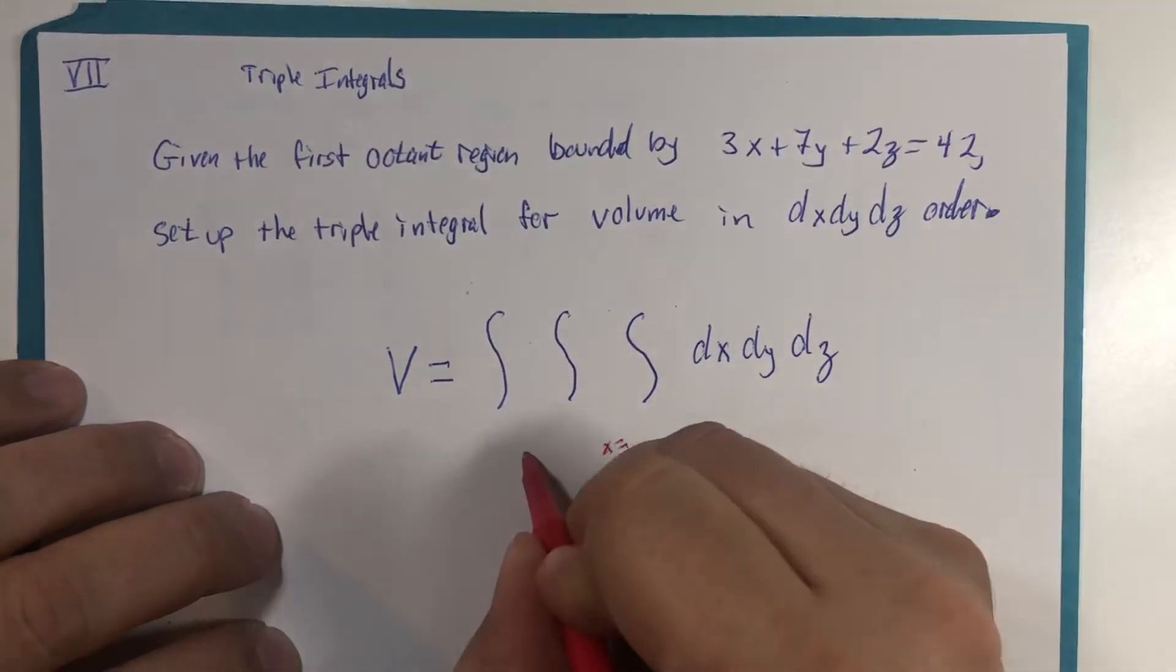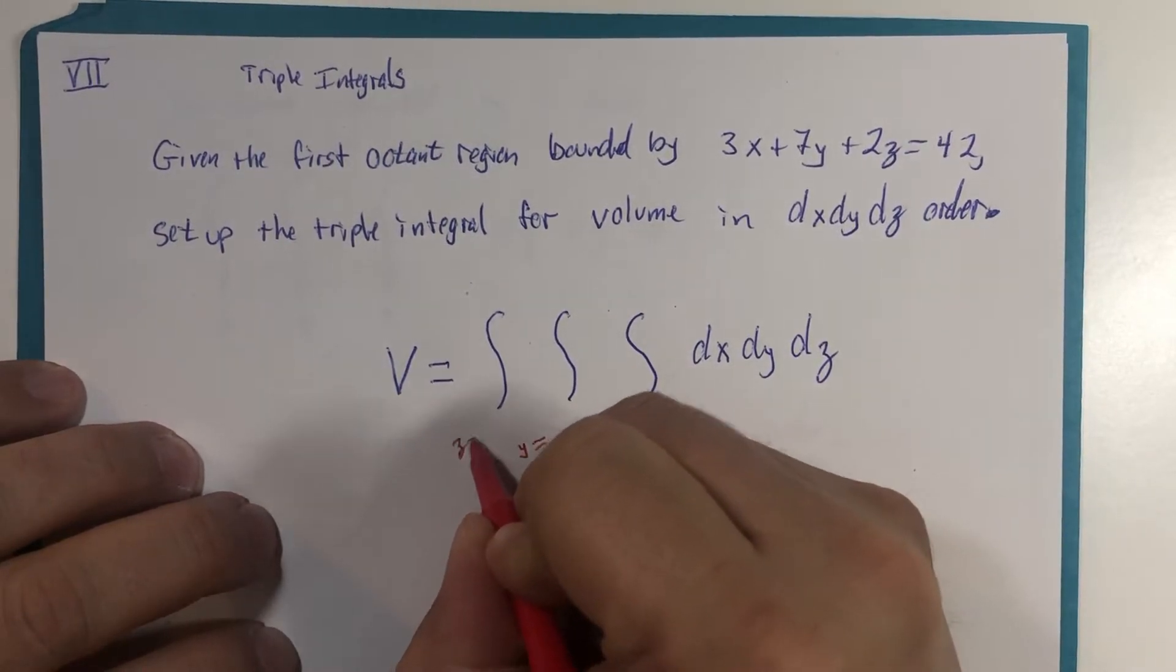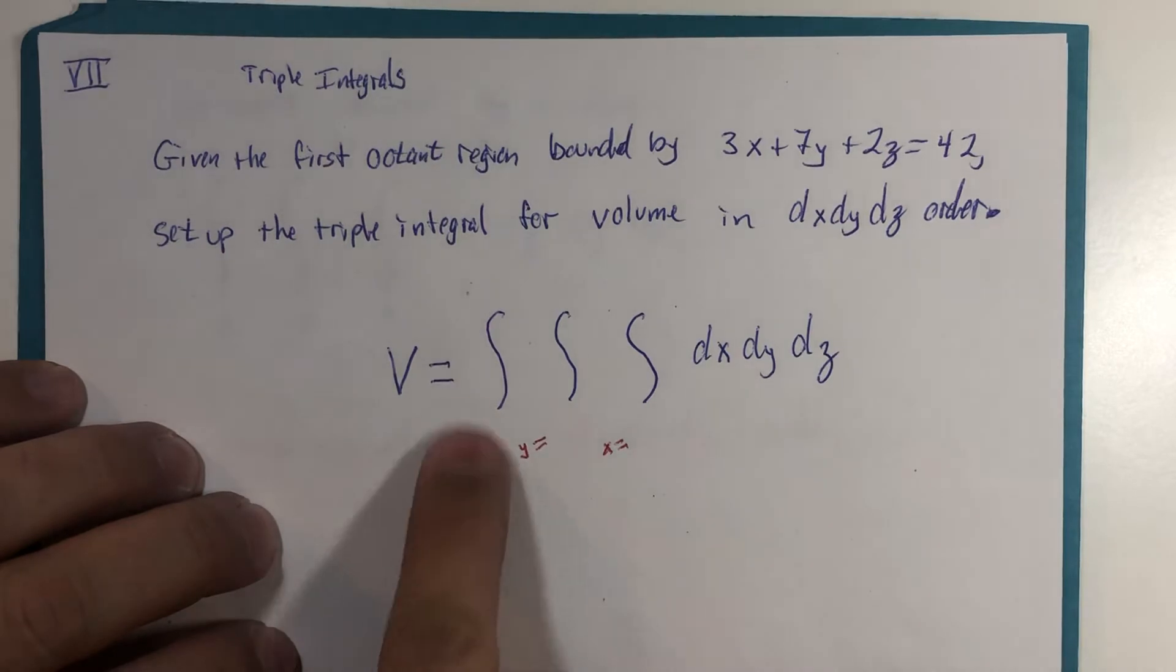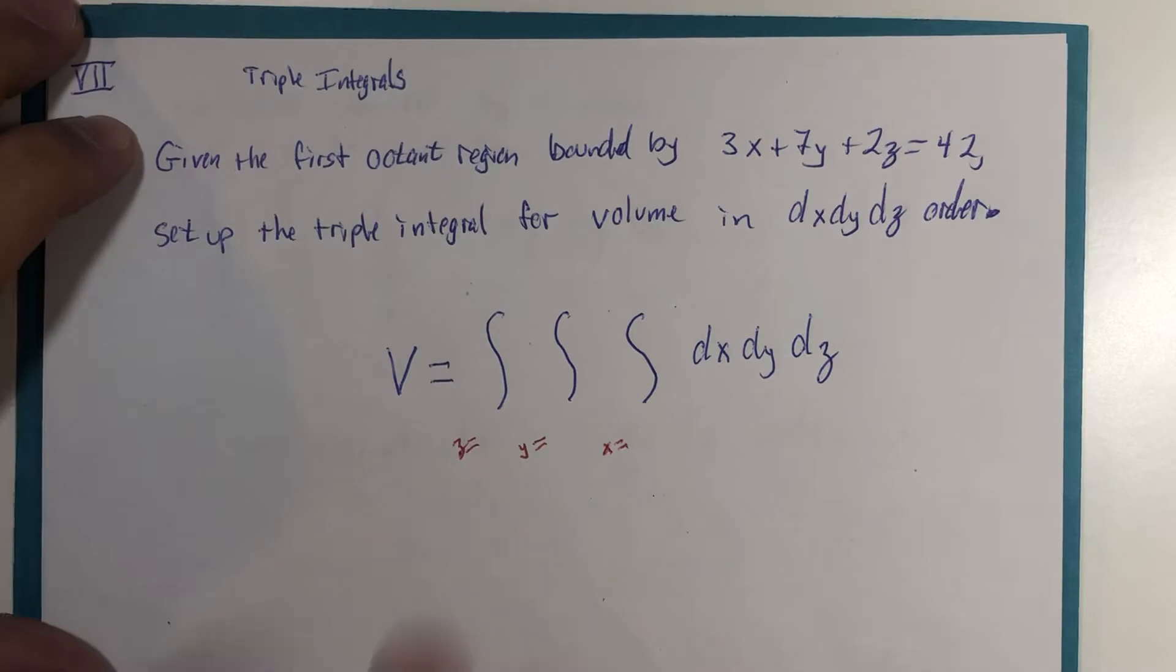That's going to be x, that's going to be y, that's going to be z. These z boundaries have to be constants. So let's do some detective work and see what we can come up with.